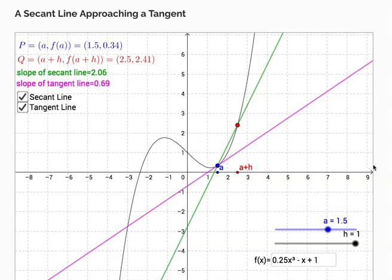In this video I'd like to do an animation that demonstrates a secant line approaching a tangent line. In this scenario I have a function 0.25x to the third minus x plus 1, and that would be the black function that is graphed right there.